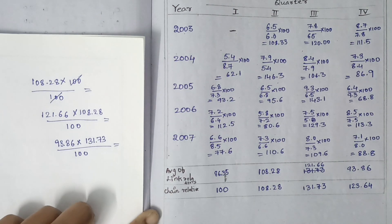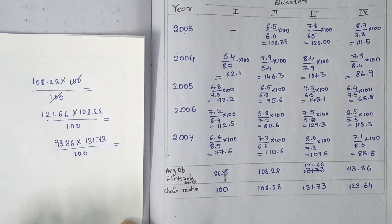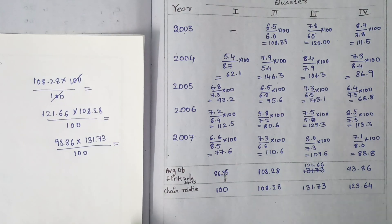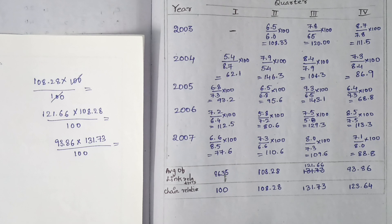This is the chain relative method. We will do 3 steps out of 6 steps total. Next step, I need part 4. If you like the channel, share and subscribe. Thank you all.